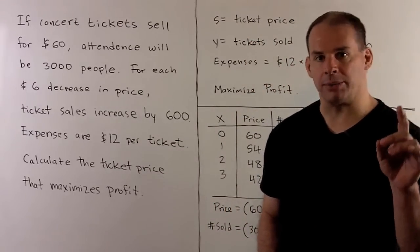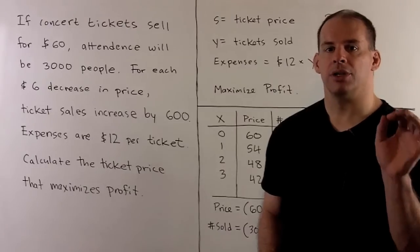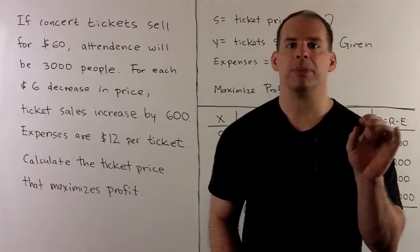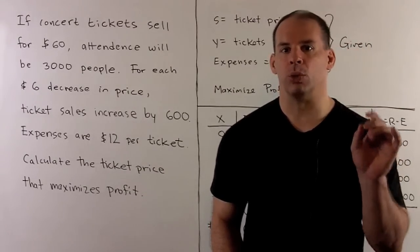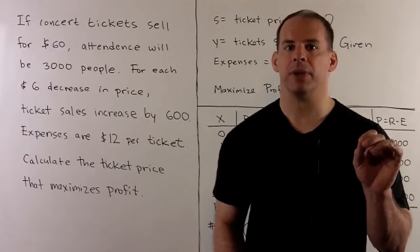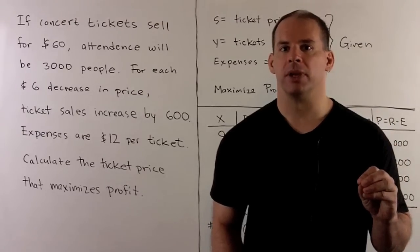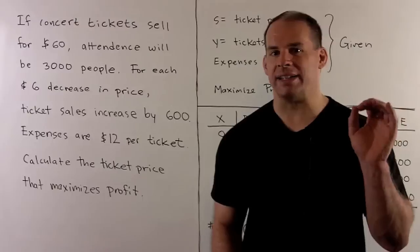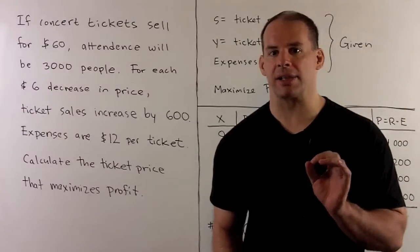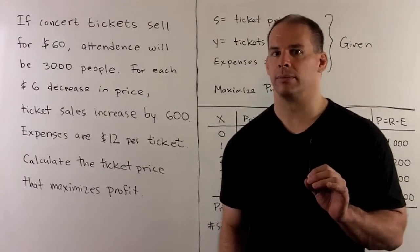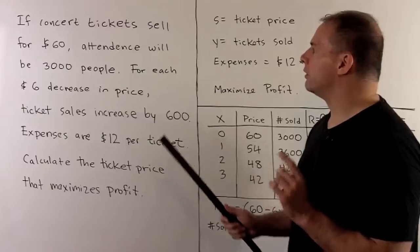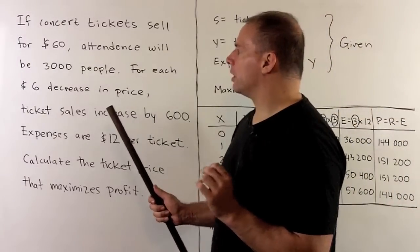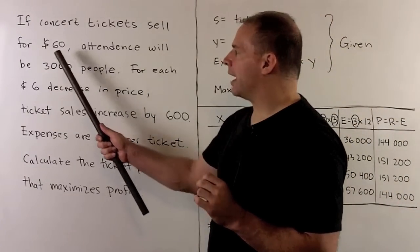We have an optimization problem, so there's a checklist. First item in that checklist: we read through our problem carefully, extract all the information that we can, name variables, and identify a function that we're trying to maximize or minimize.